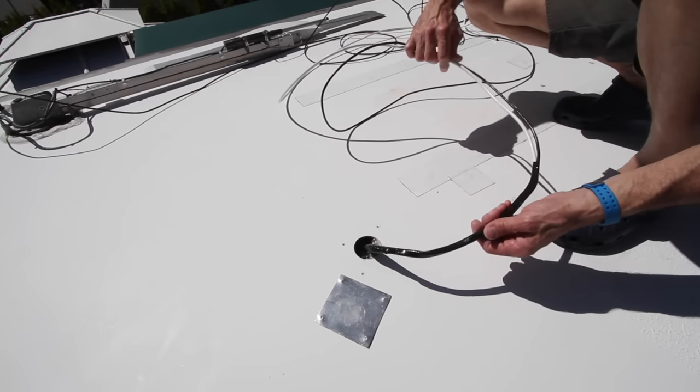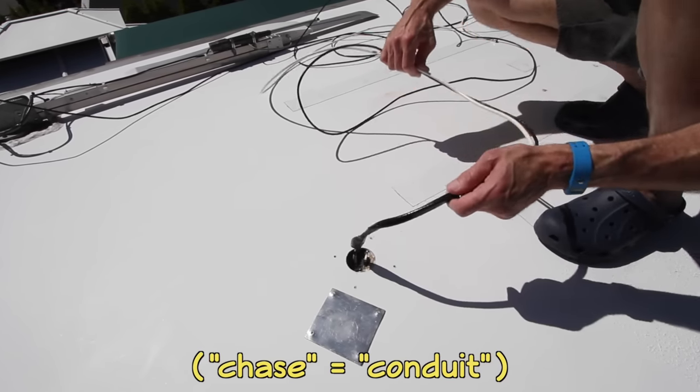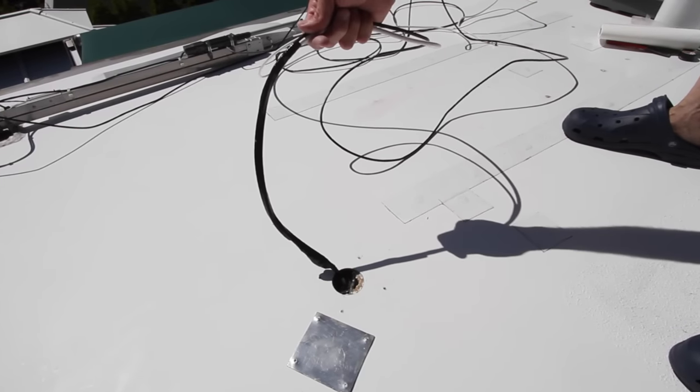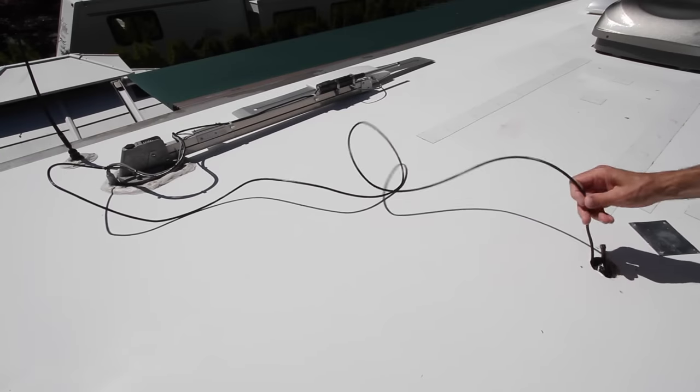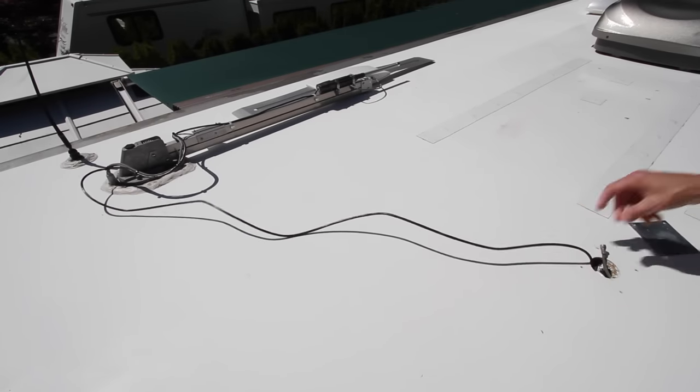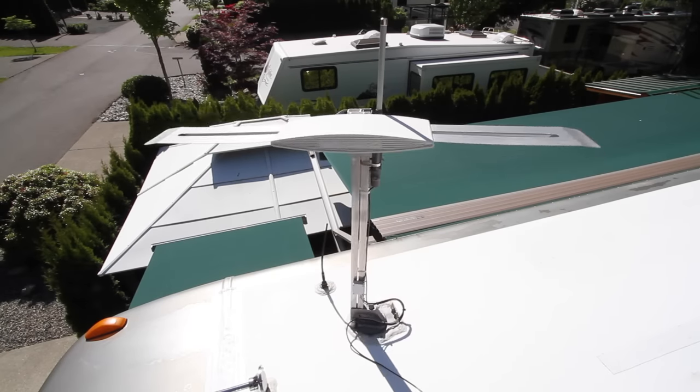When we removed our satellite dish, we left an extra cable inside the chase for pulling new cables through in the future. We've used electrical tape to attach it to the last couple of feet of our Wi-Fi Rangers cable. Have a helper inside the RV pull them through the chase while you feed them down from the roof. Be sure to leave enough slack for any needed movement.